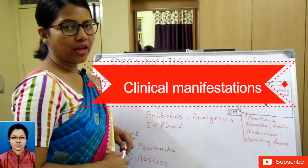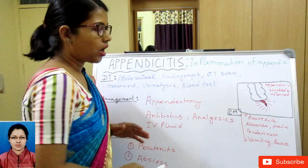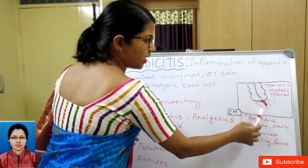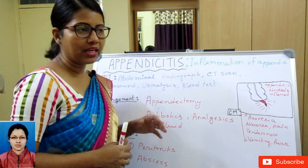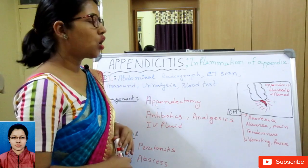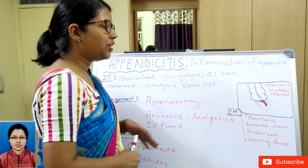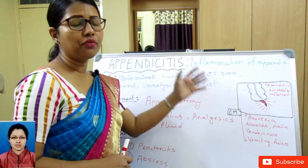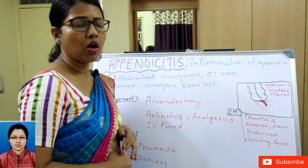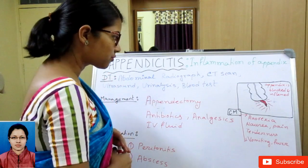The clinical manifestations of appendicitis include anorexia, nausea, pain, tenderness, vomiting, and fever. Since the appendix is inflamed, the patient will have pain in the right lower quadrant, also known as McBurney's point. There will be tenderness and rebound tenderness. If the appendix has perforated, additional findings include fever, vomiting, leukocytosis, and abdominal distension.